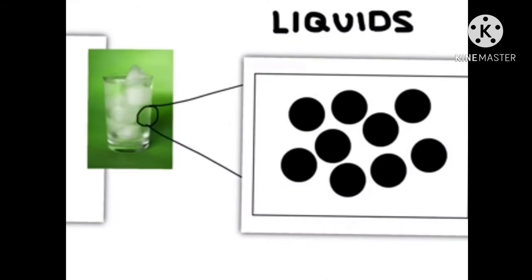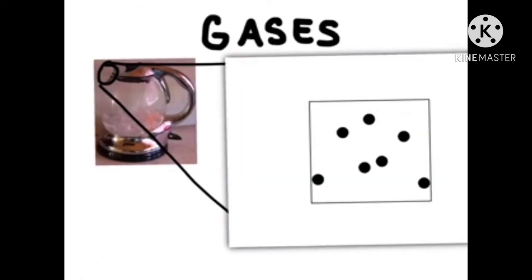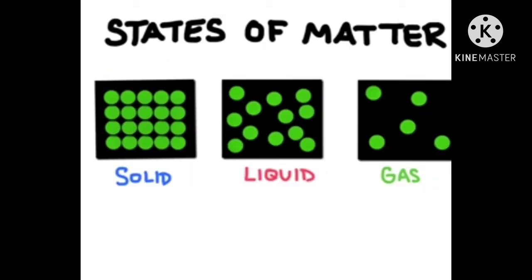In the solid type, matter exists tightly packed. In the liquid type, matter exists like this — for example, liquid and solid. In the gas type, it exists in all directions. In kinetic molecular theory, postulate one is: the particles of gas are in constant motion and collide with both one another and the container.